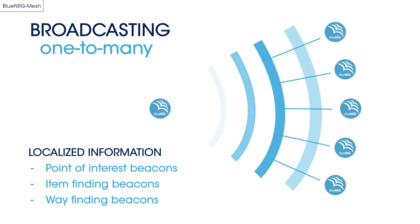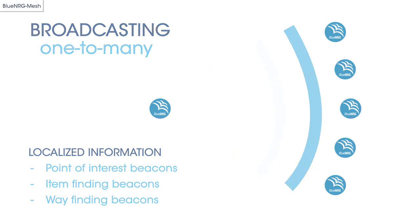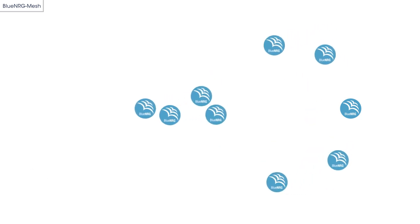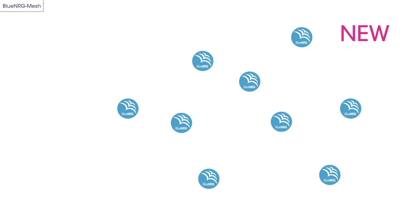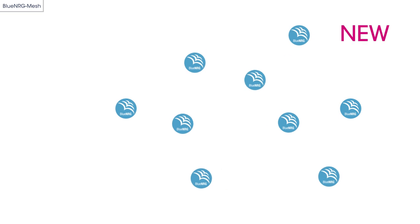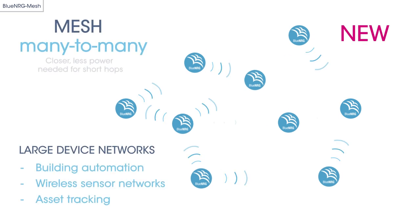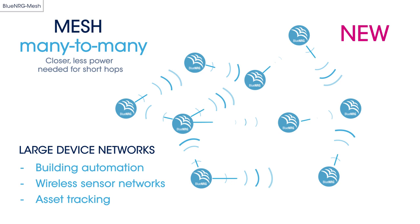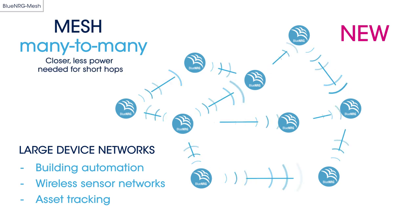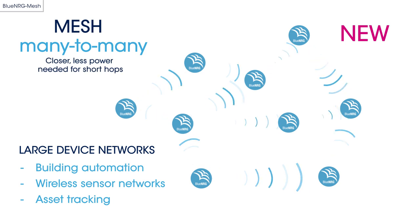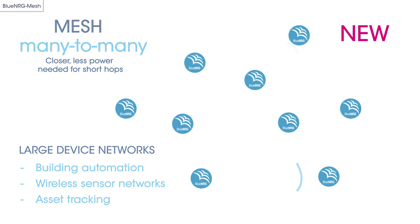This is different from a mesh network where each device transmits at a shorter distance to reduce its power consumption. Here, the network coverage and the communication range are extended by relaying messages over multiple nodes and multiple hops.